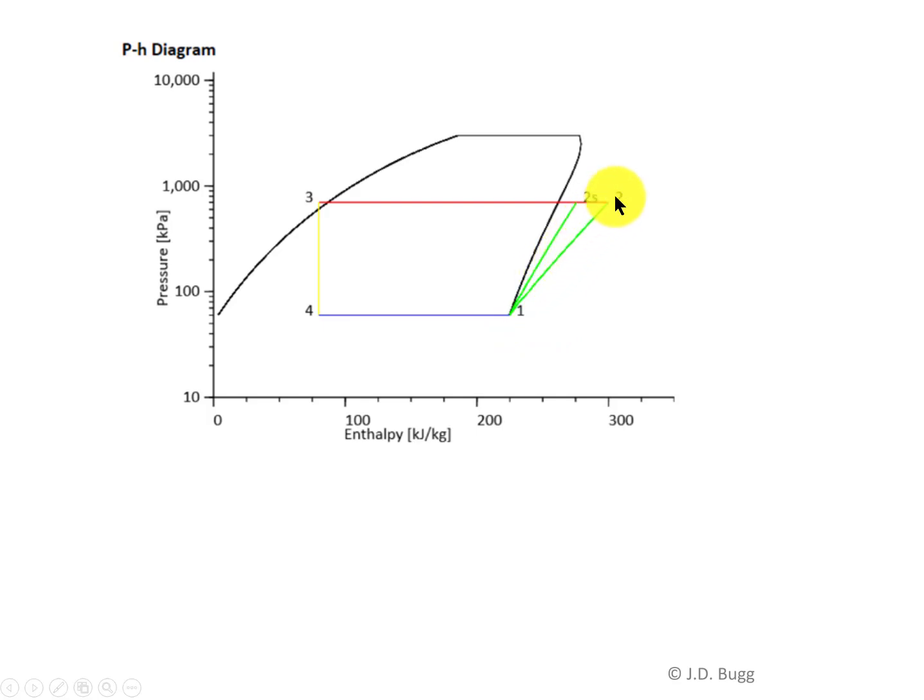A typical refrigeration system shown on a pH diagram: the compressor process is out here in the superheated region. This particular diagram shows the actual process from one to two, and it also shows the isentropic process from one to two s. The condenser is from point two to point three, that's a constant pressure process, so it's a horizontal line. The throttling valve is the vertical line from three to four, and it's constant enthalpy, so that's why it's a vertical line. And then finally, the evaporator is another constant pressure process taking place inside of the liquid vapor region, going from four to one.